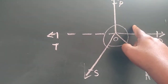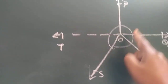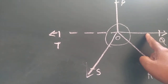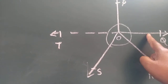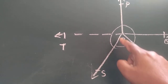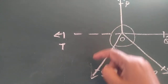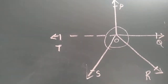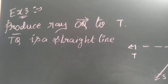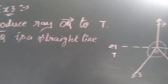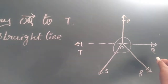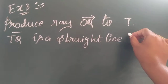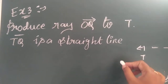The sum of these two angles is 180 degrees. Similarly, the sum of all three angles on the other side is also 180 degrees. When you add these angles together, the total will be 360 degrees. What I have explained — producing ray OQ up to T — is the same thing I have written here.